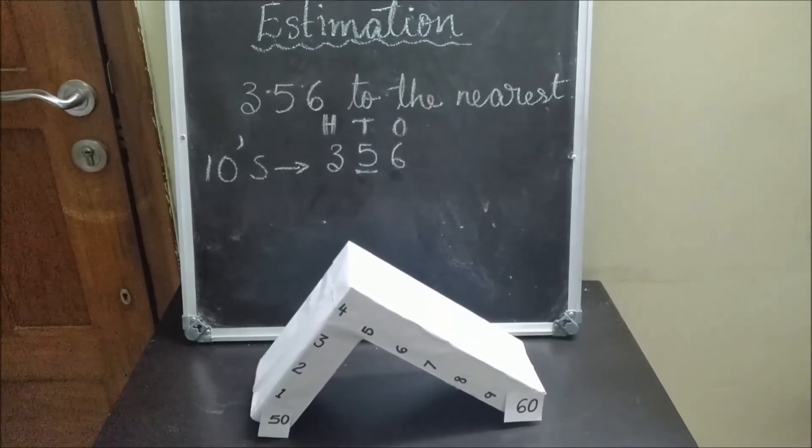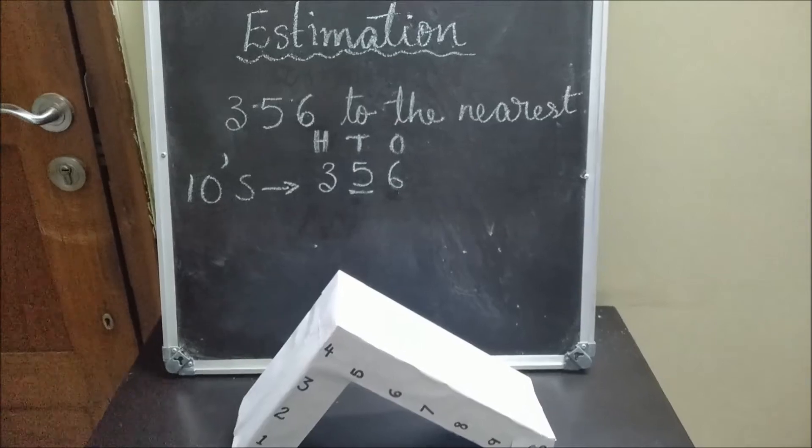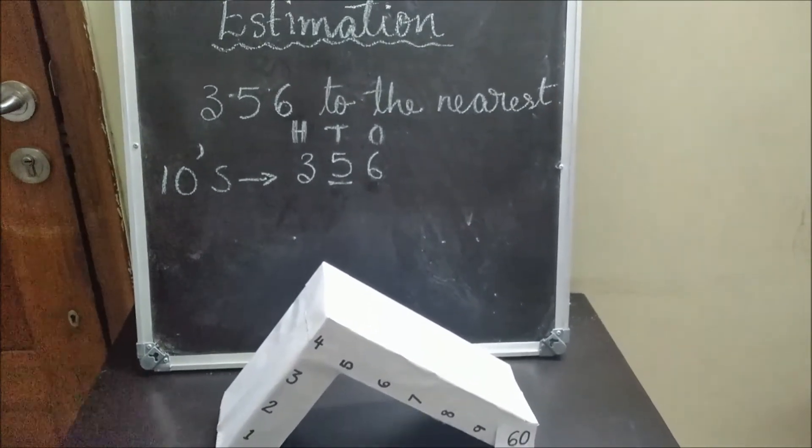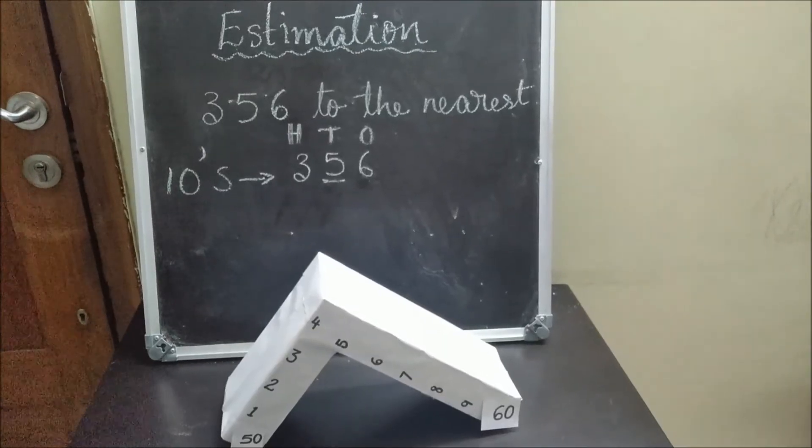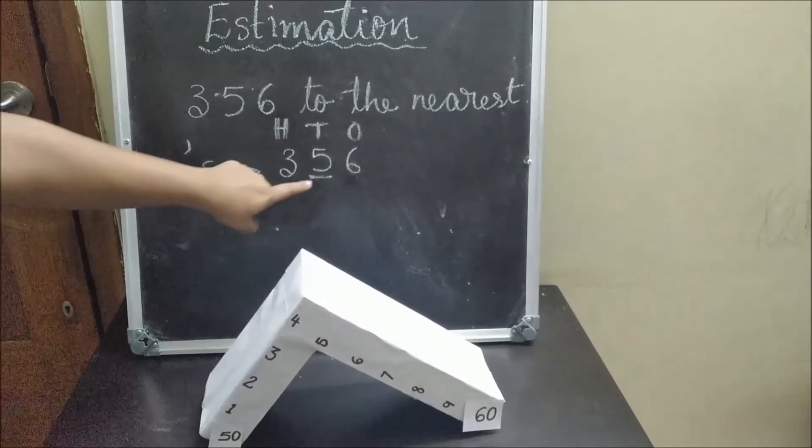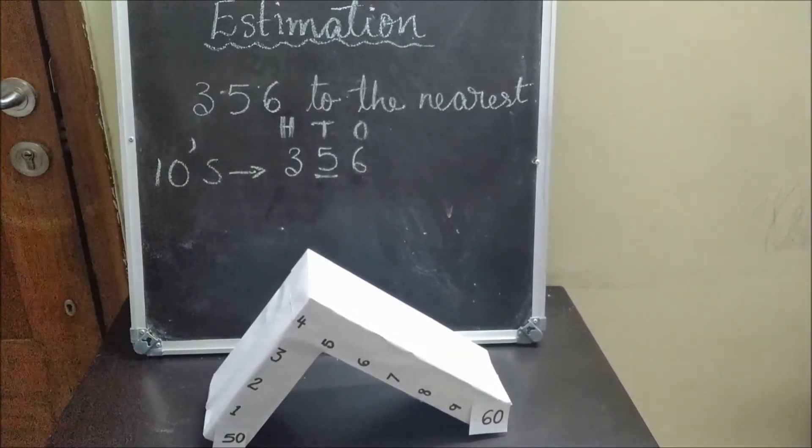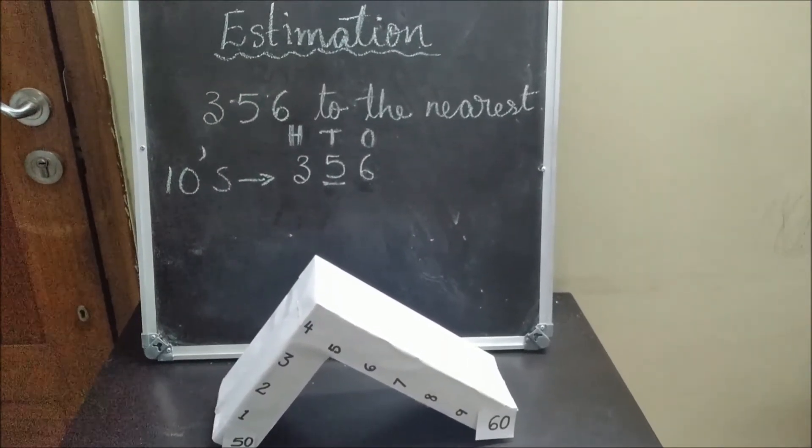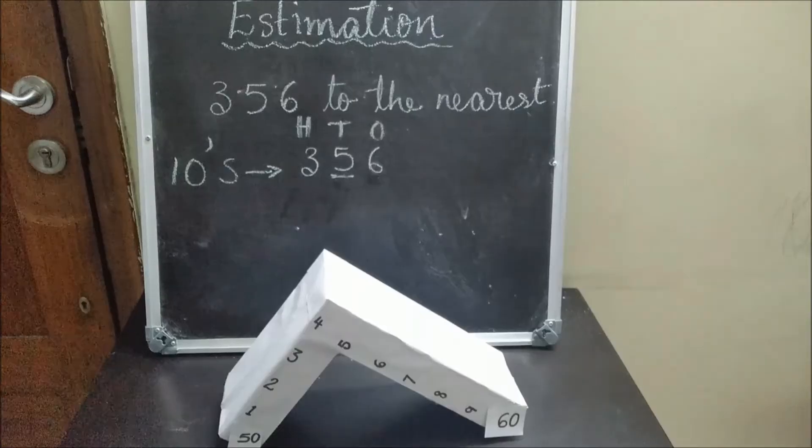Now, let's try to round off a three-digit number to the nearest tens. Here, we are rounding off the number to the nearest tens. So, we must underline the tens place digit. Now, we must check the digit towards its right. Here it is 6.